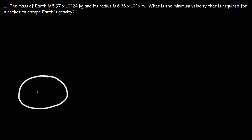Let's draw a picture. Let's say this is the Earth. If you're on the Earth and you throw a rock, the rock is going to go up and then it's going to come back down. But if you can throw it fast enough, if you can get to a point where the velocity is high enough, it can escape Earth's gravity and not come back down. We want to calculate what that velocity is — how fast should an object be going in order to escape Earth's gravity?